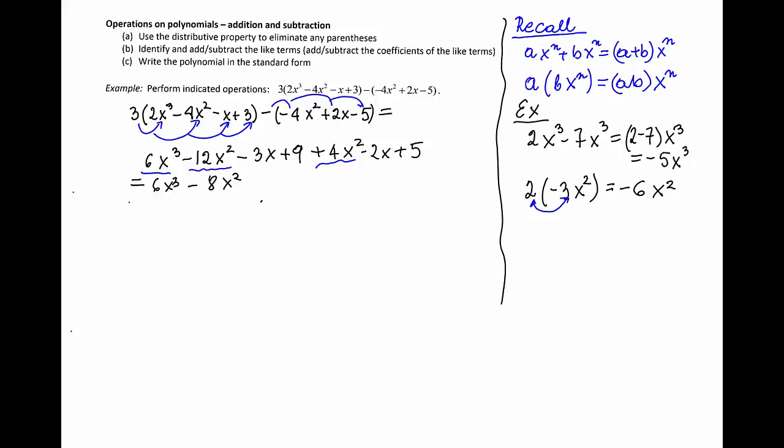The next term will have x, so here is the term with x and here. These are like terms. When added, will give me negative 5x. And then we are left with the numbers: 9 plus 5 is 14. As a result, we have a polynomial in a standard form.